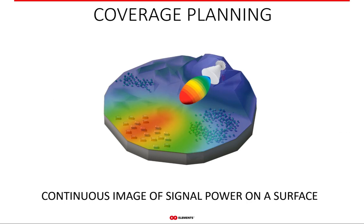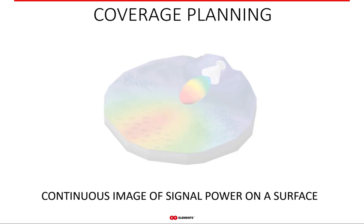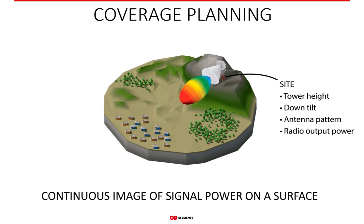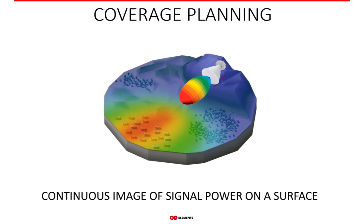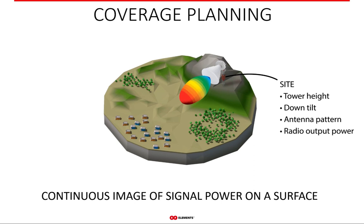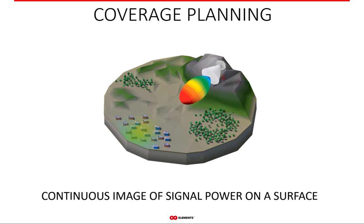Coverage is a visualization of signal strength on a map. There is no hard limit to where you can or cannot have coverage — it shows how signal strength changes with distance in a continuous, smooth decay until the signal is below the radio noise floor, which sets a practical limit on how far it makes sense to display coverage. The precision of the coverage calculation is limited by the precision of all input variables. Factors like changing weather or foliage with the seasons are difficult to account for but should be considered.